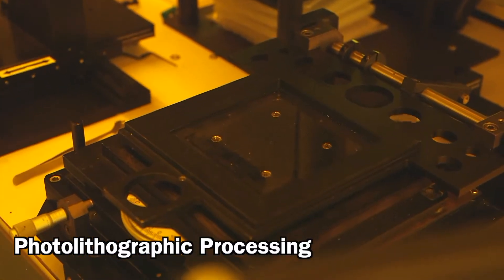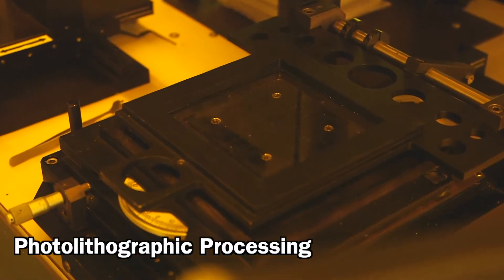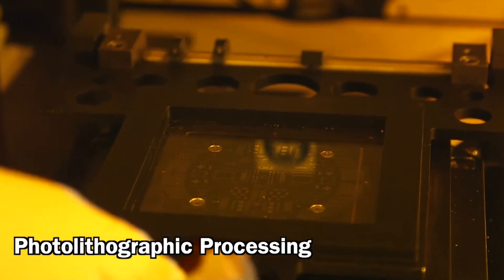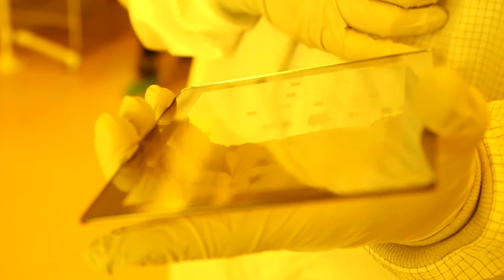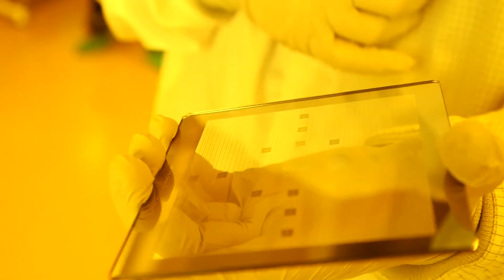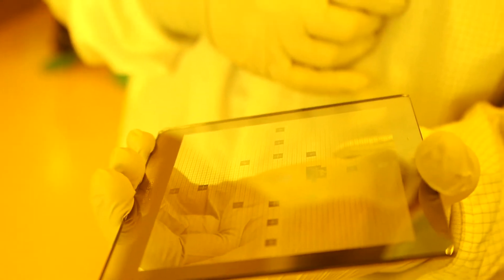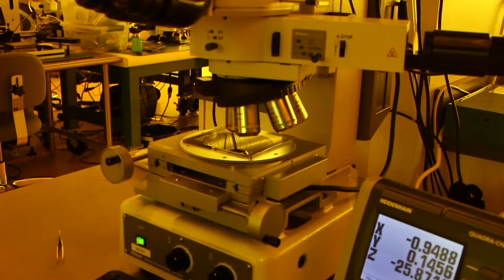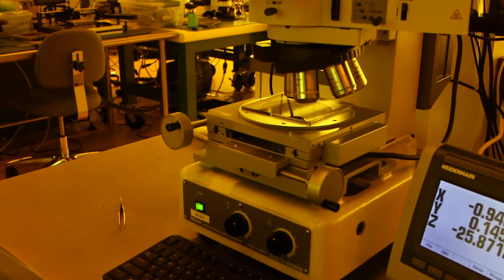This machine over here is called an ultraviolet light exposure system, and what we do is we put the wafer on this chuck right here and lay a mask down on top of it. So photolithography is a process that's used to make artwork that is so small that your eyes can't see it.